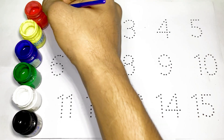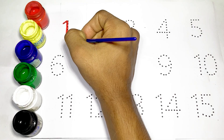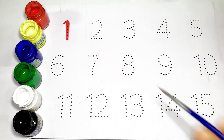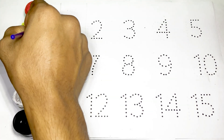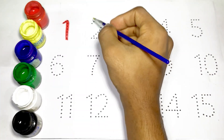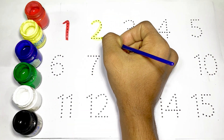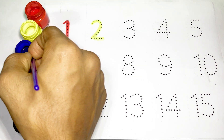The numbers of one, and use red color. Kids, the numbers of two, and use yellow color. T-W-O, two. Kids, number three.